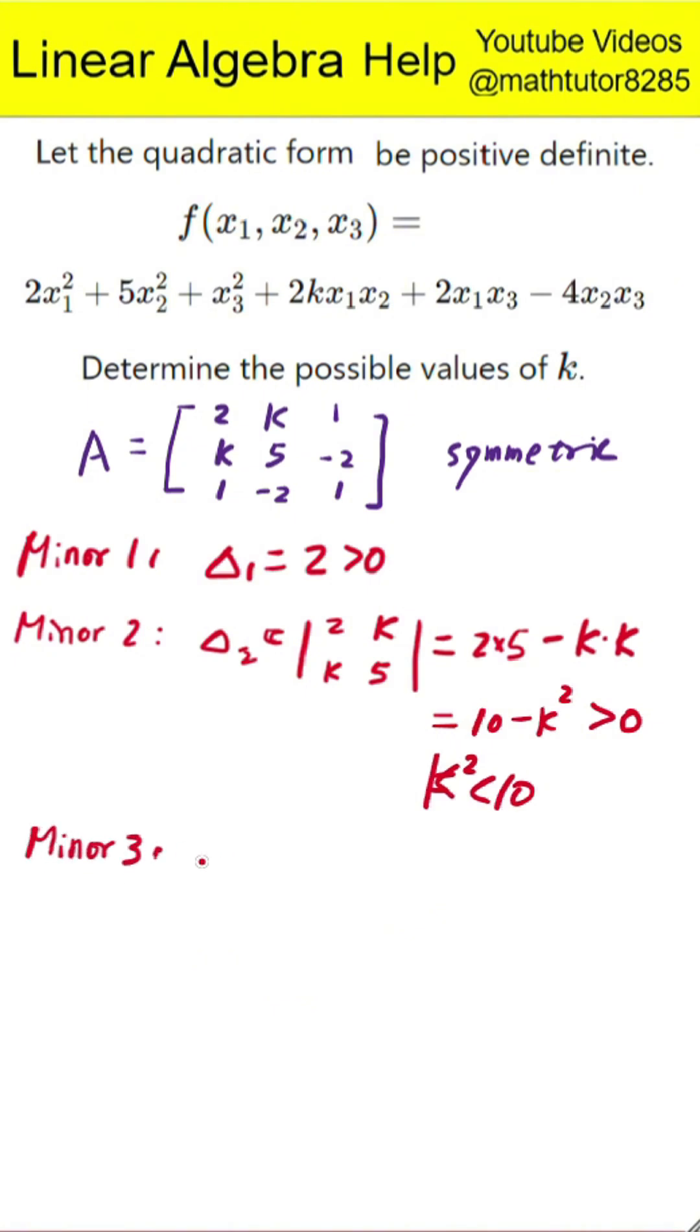Now, we compute the 3x3 determinant of the whole matrix. We expand along the first row. 2 times the determinant of the bottom right 2x2 matrix, minus k times the determinant formed from the second and third columns of the first and third rows, plus 1 times the determinant formed from the second and third columns of the first and second rows.